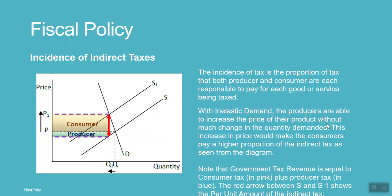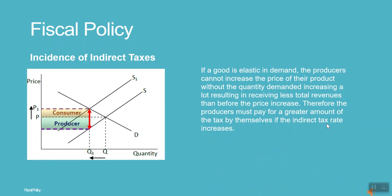Government tax revenue equals consumer tax plus producer tax. The arrow between S and S1 shows the per unit amount of the indirect tax. If a good is elastic in demand, producers cannot increase the price without quantity demanded falling a lot, resulting in less total revenue. Therefore, producers must pay a greater share of the tax themselves if the indirect tax rate increases.